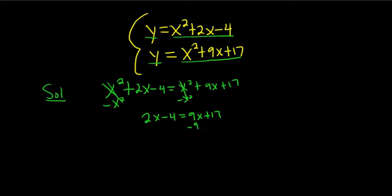I'm going to subtract 9x from both sides and also add 4 to both sides at the same time. So these cancel. 2x minus 9x is negative 7x. 17 plus 4 is 21.